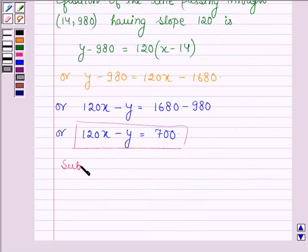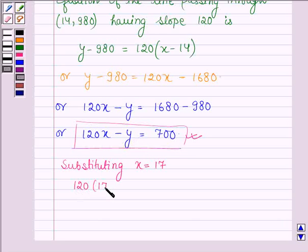Therefore, substituting X is equal to 17 in this equation we will get the value of Y. So we have 120 into 17 minus Y is equal to 700